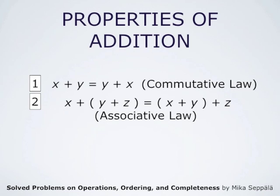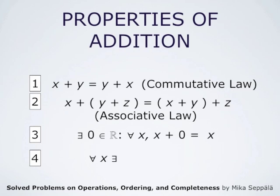The third property says that there is a zero element in the set of real numbers such that for any x, x plus zero is always x. And the fourth property says that for any x, there is always y such that x plus y equals zero. This y is the additive inverse of x.